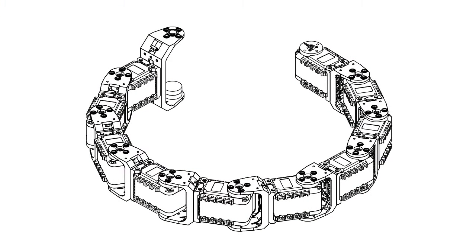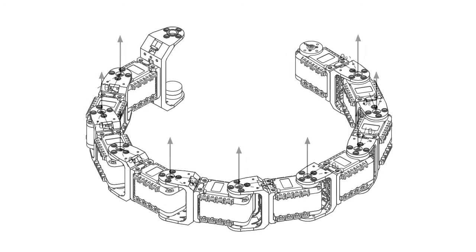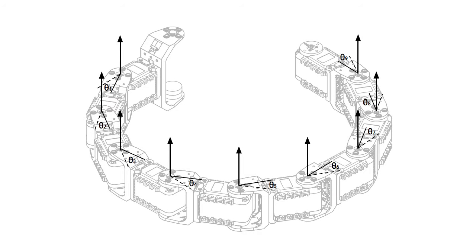The robot consists of 9 servos and 1 sensor module linked together in series. The axis of rotation of all the joints are parallel to each other, so even though the robot has 9 degrees of freedom, they are redundant, so the robot has limited configurations.